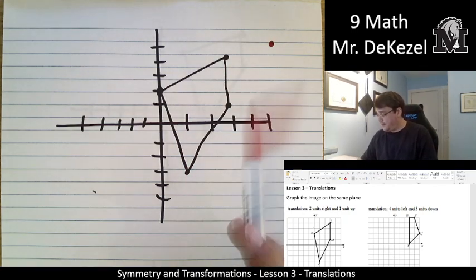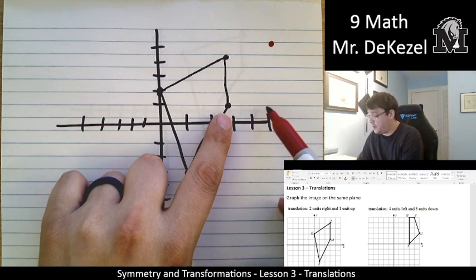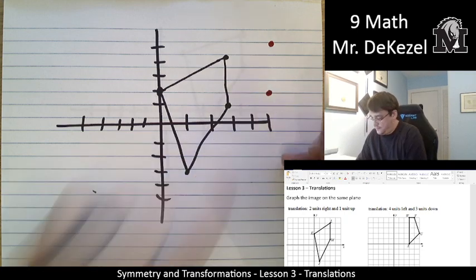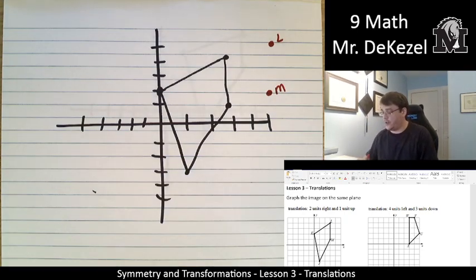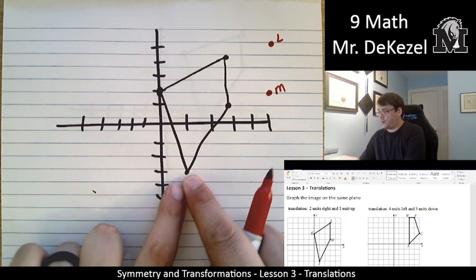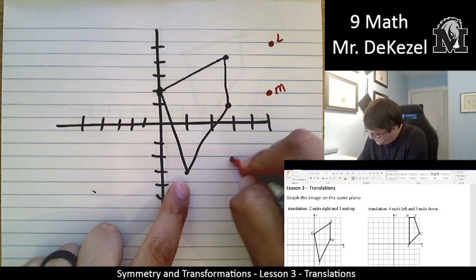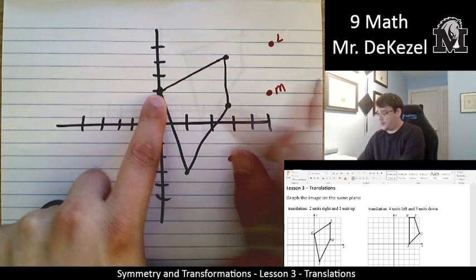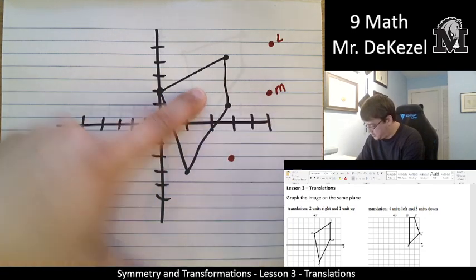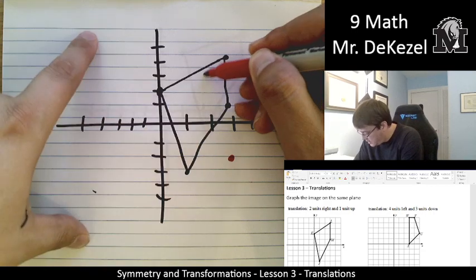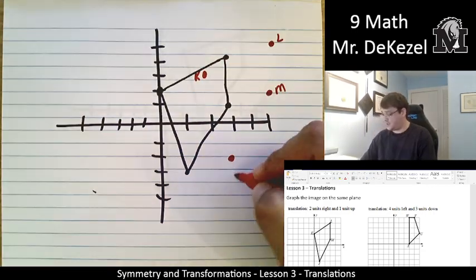We are then going to take M and go two units to the right, one, two, and one unit up. Let me go ahead and label these here, just so that we are clear. We're going to take point J and we're going to go one, two to the right and one up. And then point K. We're going to go one, two to the right. It's quite a big shift because I drew them far apart. It's okay. And one up. That's point K.